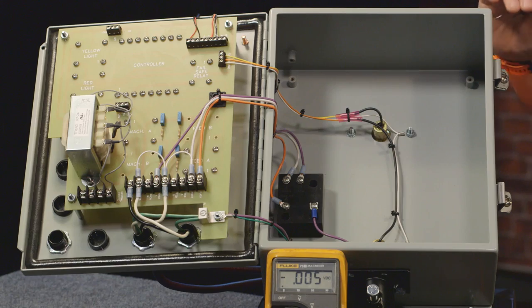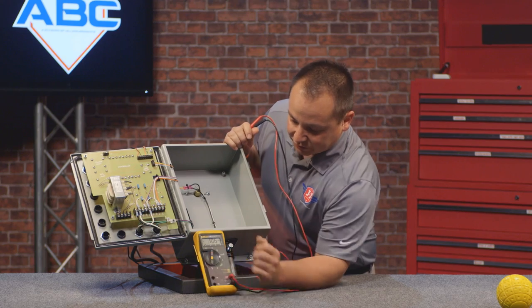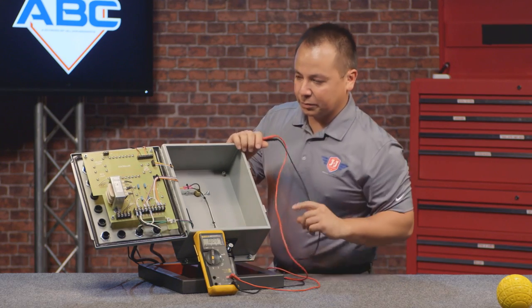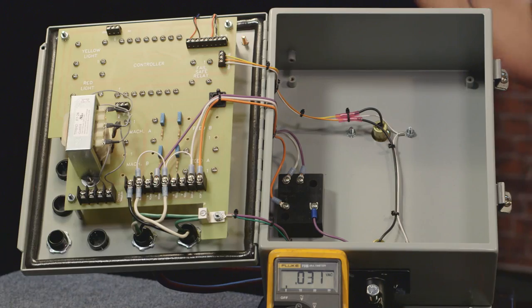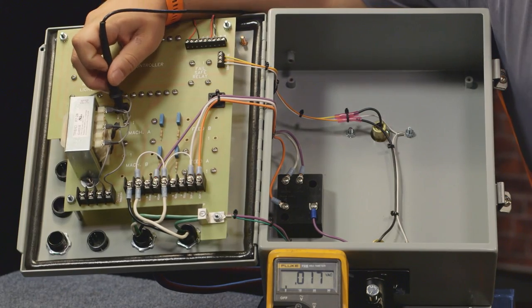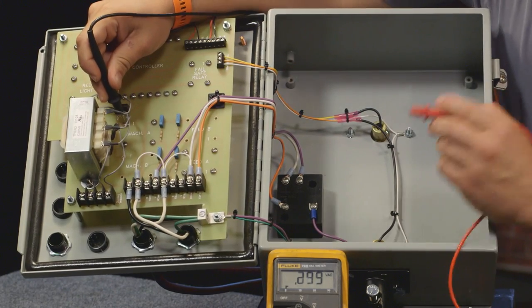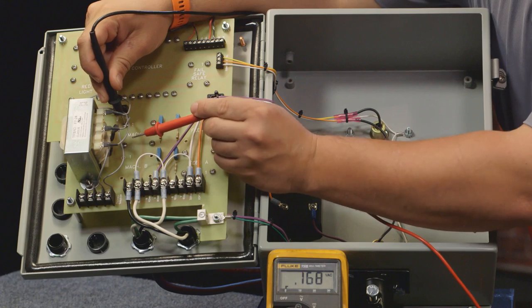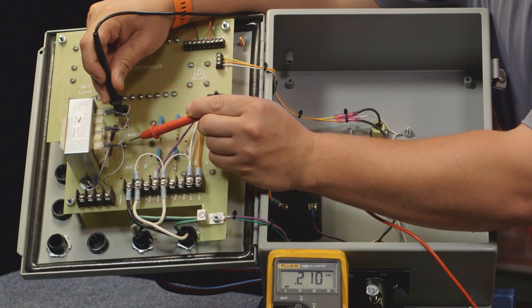And to do that, we're going to change the multimeter back to voltage AC, the V with the squiggly line. Now again, we're using number one as our ground screw. So the controller sends down 5 volts to the lower left-hand screw, and that tells the relay to turn on.